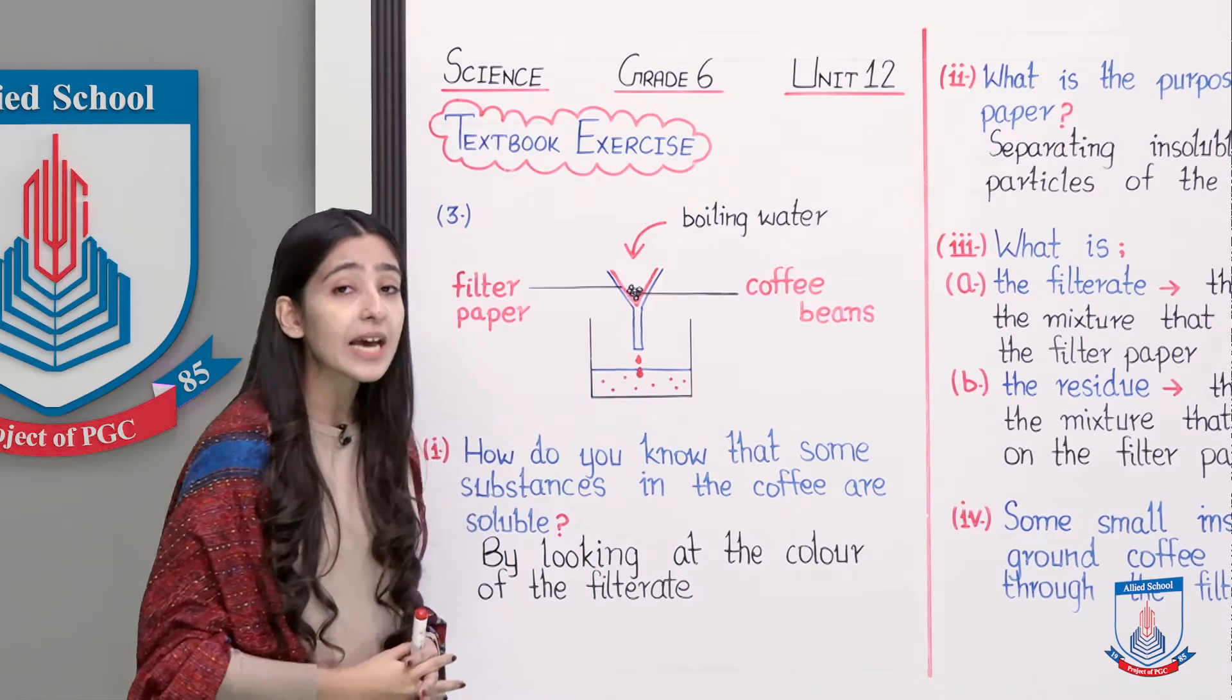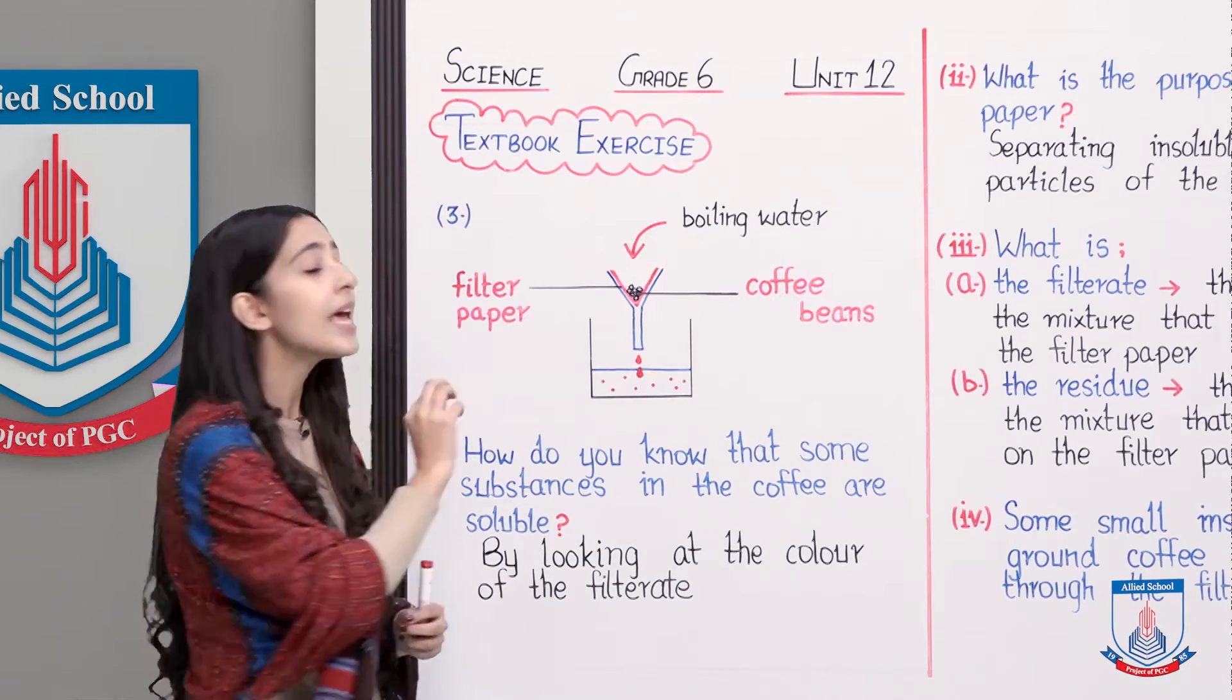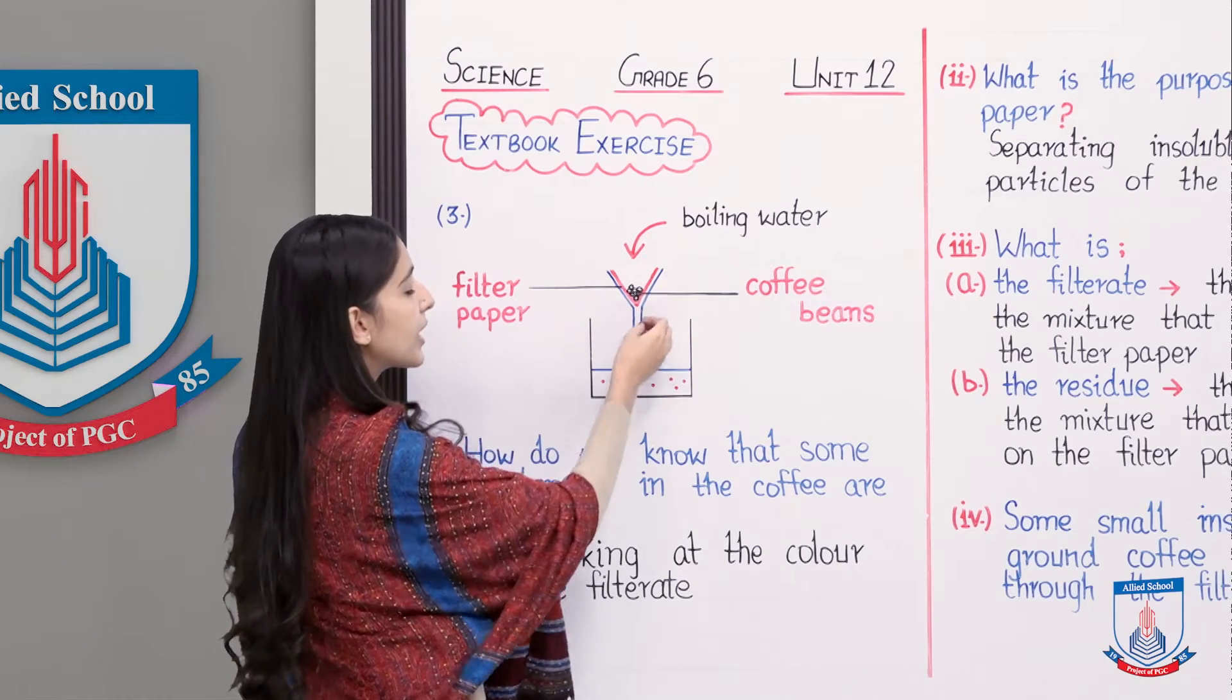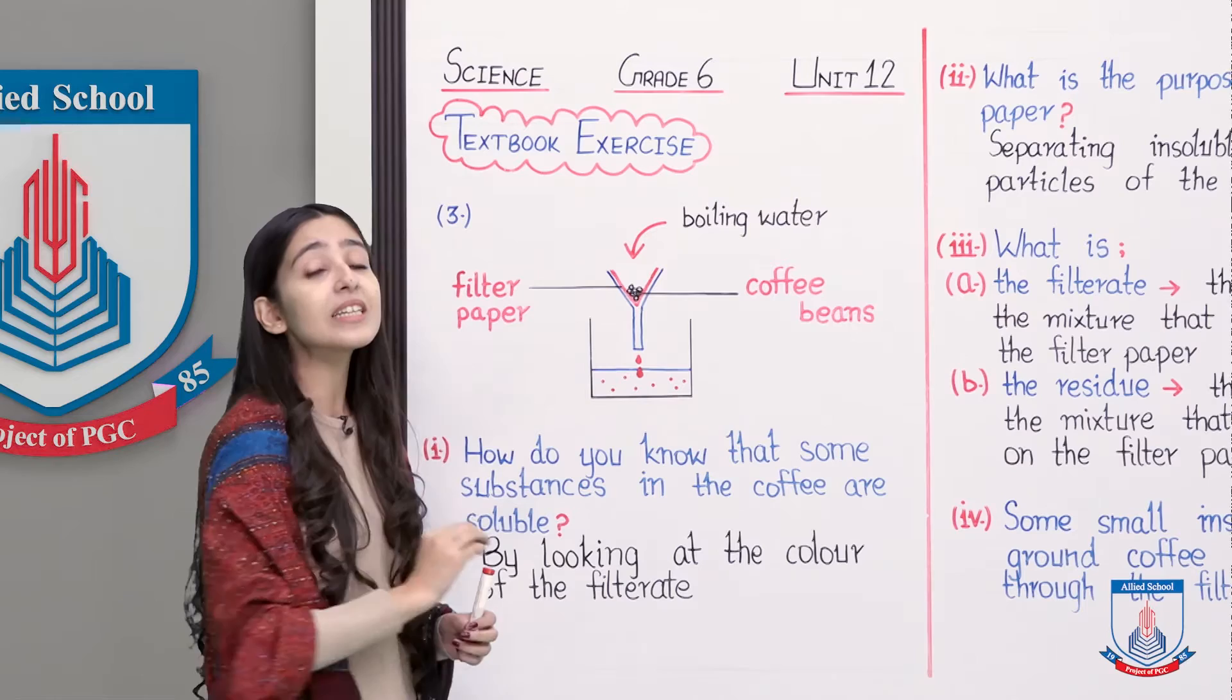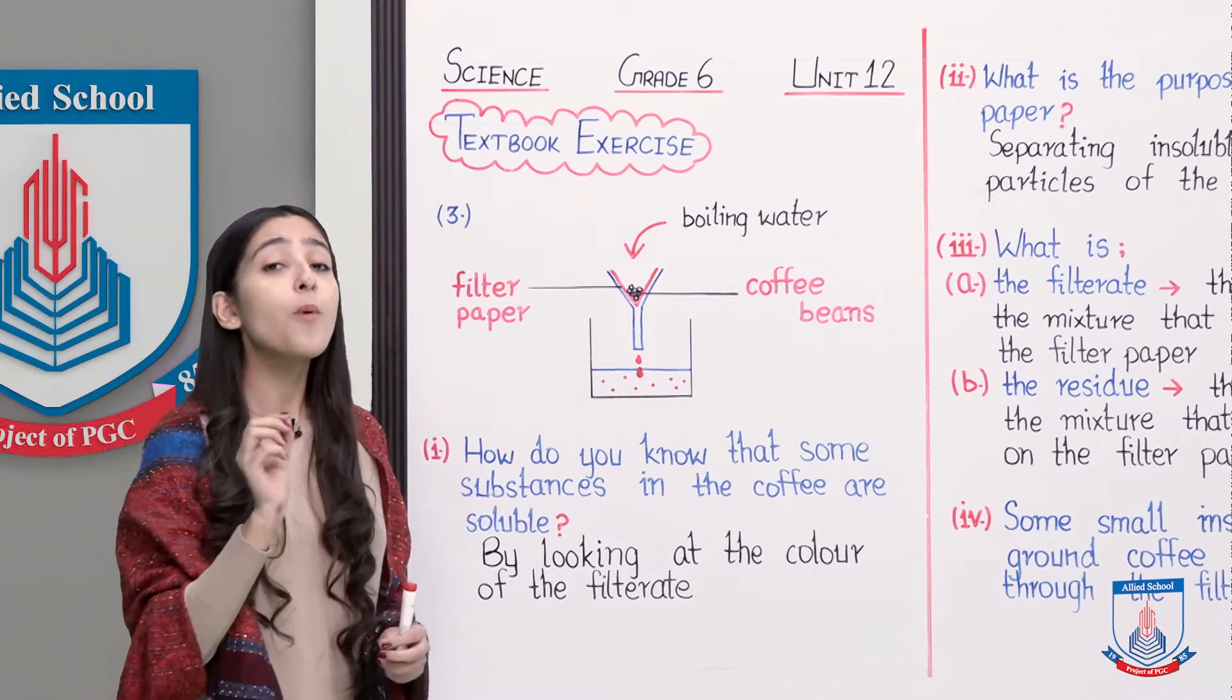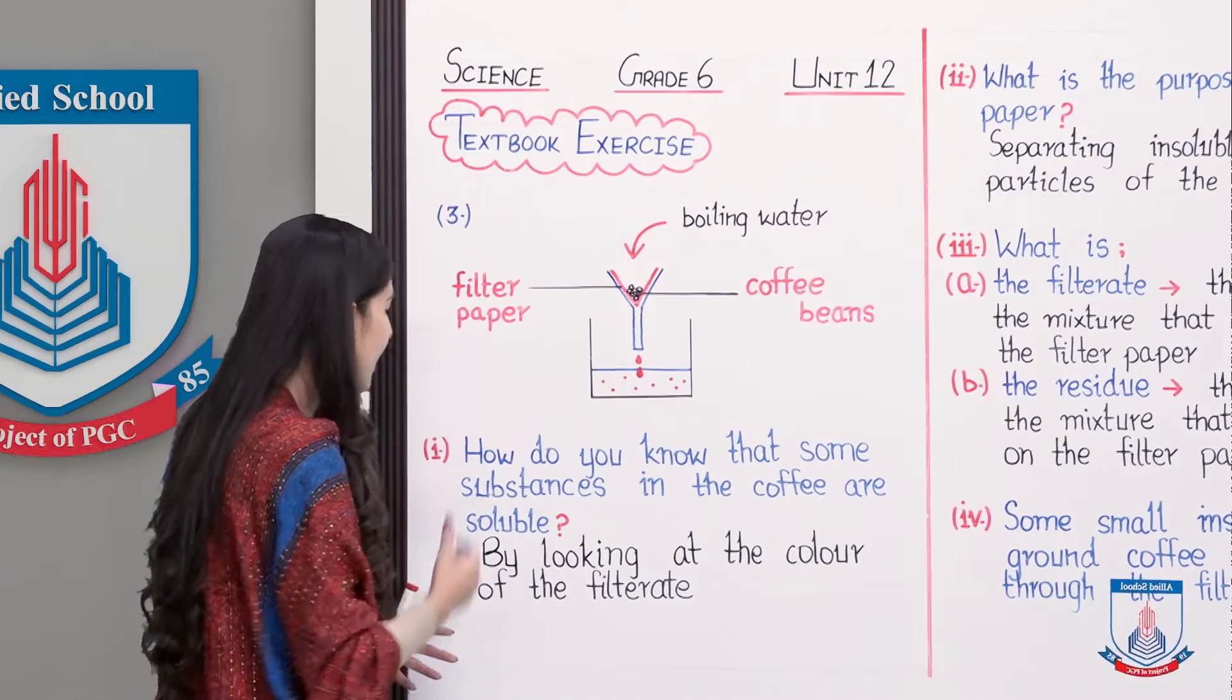When we pass it through coffee beans, there must be something that is being added to it and making its color brown. These are the small particles of coffee that pass through the filter paper. What I have marked in red boundary is your filter paper.